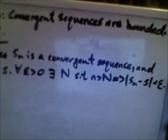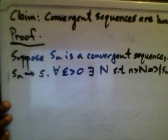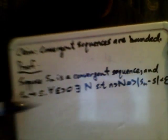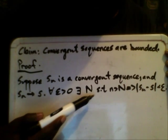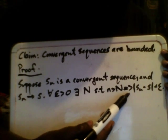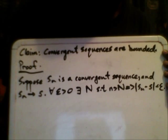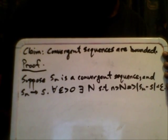We will apply the formal definition of a limit of a sequence, which states: for all epsilon greater than zero, there exists capital N such that small n greater than capital N implies that the absolute value of Sₙ minus S is less than epsilon.